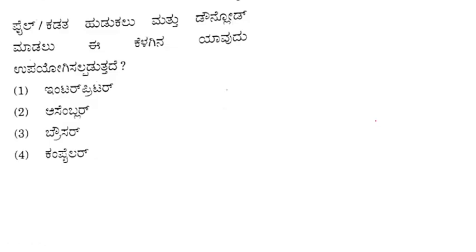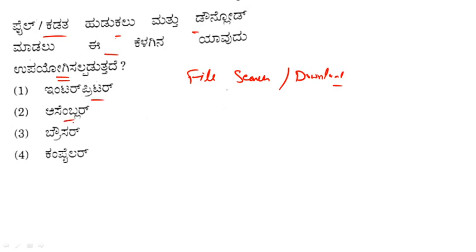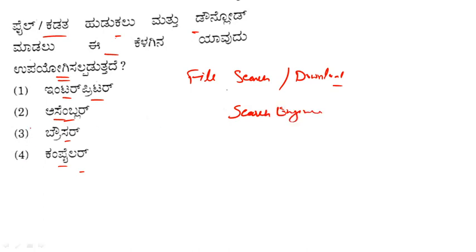The question is about what is used to search and download a file. The options are interpreter, assembler, browser, and compiler. The file is searched and downloaded using a browser. So browser is the right answer — option 3.